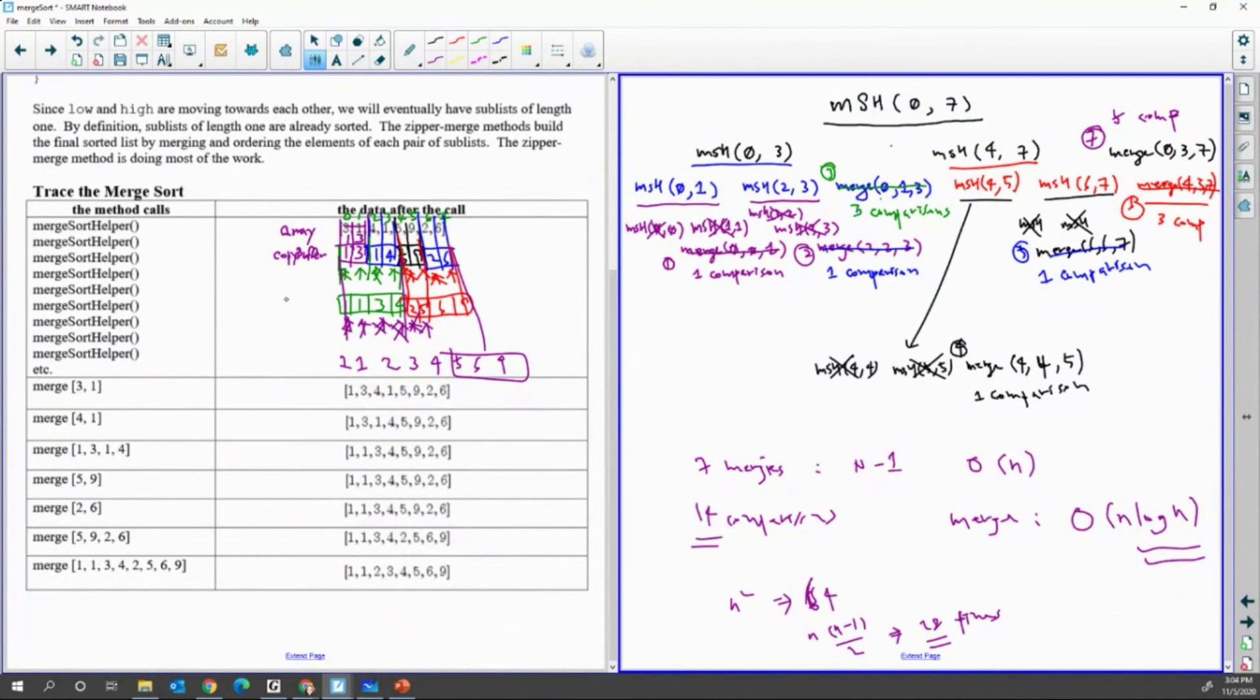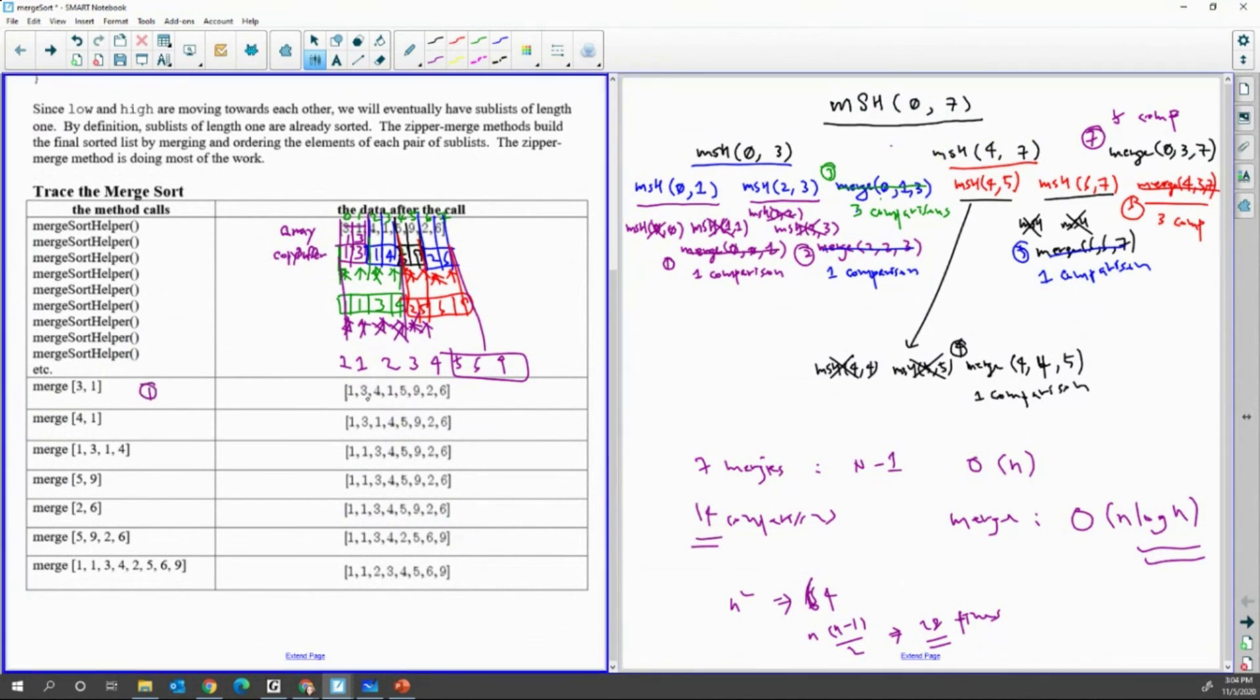When I have 1, 3, 1, 4, 1, 5, 9, 2, 6, the first merge we do only 3, 1.